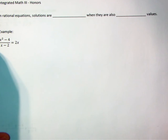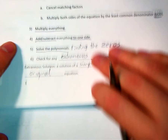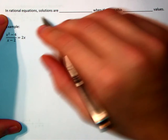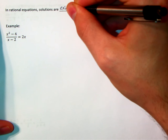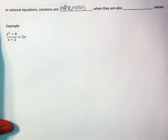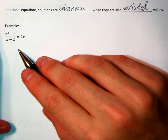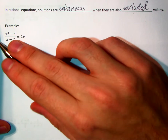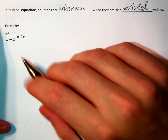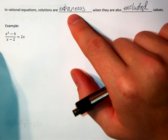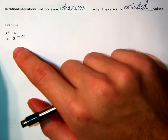So why do we want to know about those? We want to know about them so that we don't include them in our answer. How do I check for extraneous solutions in rational equations? In a rational equation, solutions are extraneous when they are also excluded values. You know how this rational equation has an equal sign and a rational expression — a fraction with polynomials? Solutions are extraneous when they're also excluded values. An excluded value happens when the denominator of any fraction is zero.